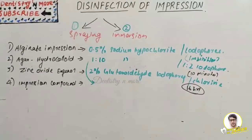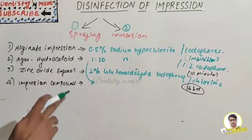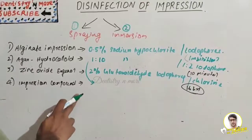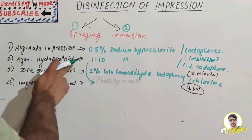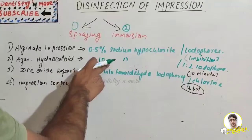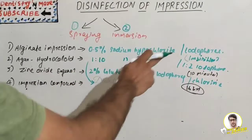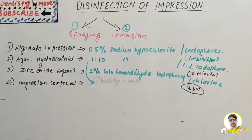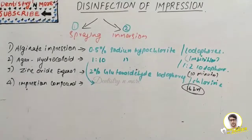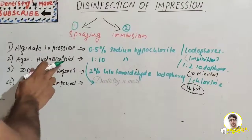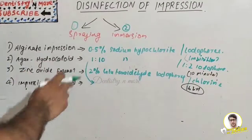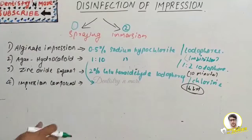For impression compound, we follow the same method as for agar hydrocolloid: a 1:10 ratio of sodium hypochlorite or using iodophore, commonly kept for 10 minutes. So impression compound and agar hydrocolloid have the same method of disinfection.